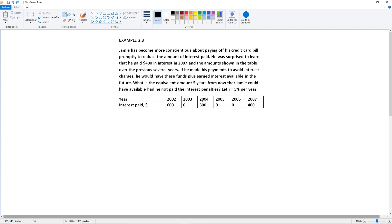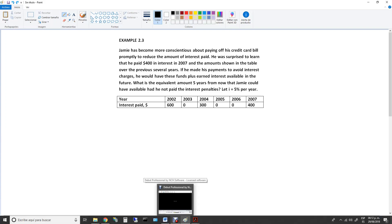he would have had these funds plus earned interest available in the future. What is the equivalent amount five years from now that Jamie could have available had he not paid the interest penalties? Let I equals 5% per year.